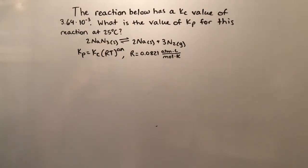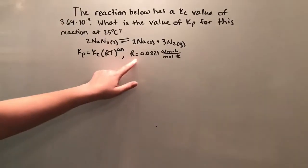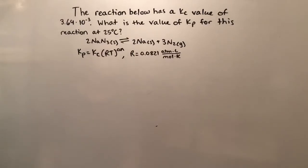We're given our Kc value, 3.64 times 10 to the negative 3. And we're given our R value, 0.0821 atm times liter over mole times Kelvin.